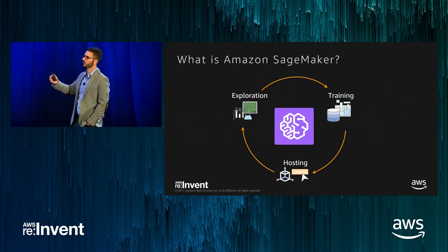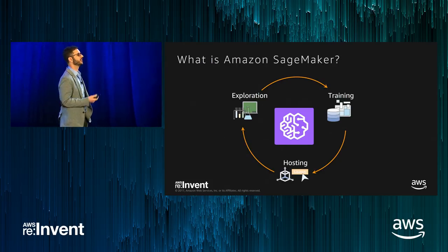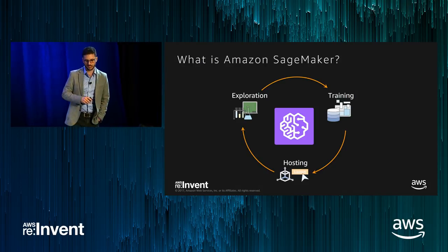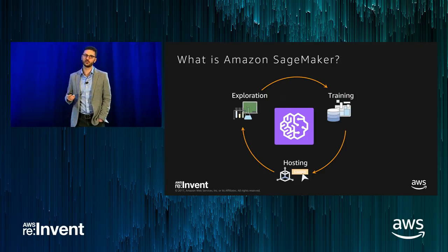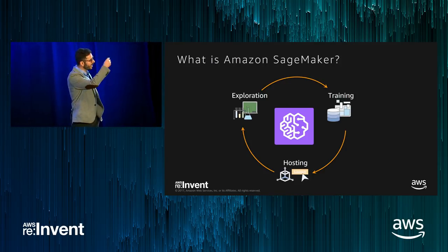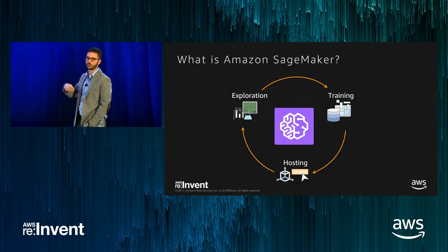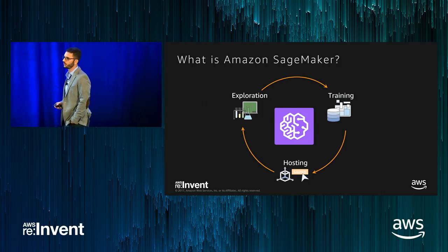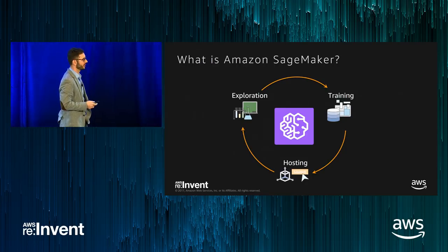That hosting creates more data, which gets fed into further insights and exploration. We observe that the quality of the solution is not necessarily how good a single model is, but rather how many times you went through this cycle — having more insights, understanding what worked and what didn't. The more times you go around, the better. SageMaker allows you to make that cycle much tighter than it currently is.